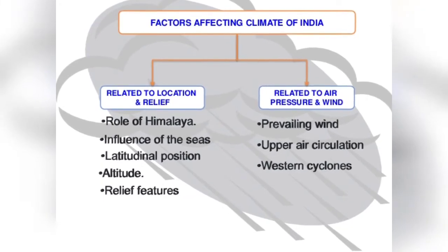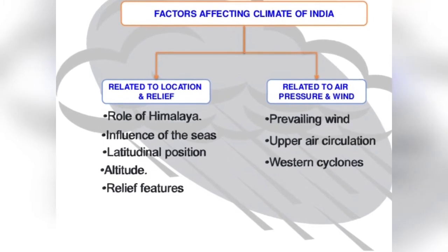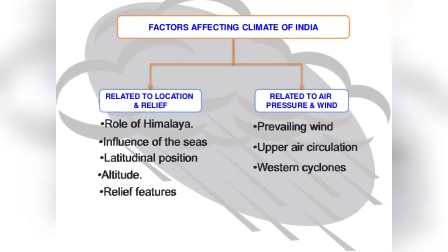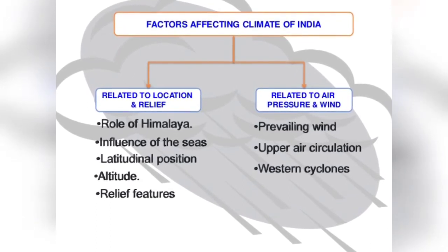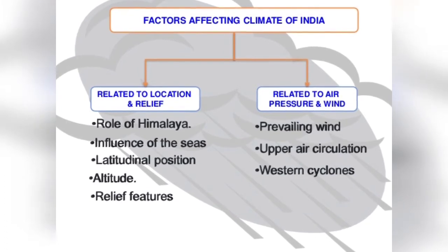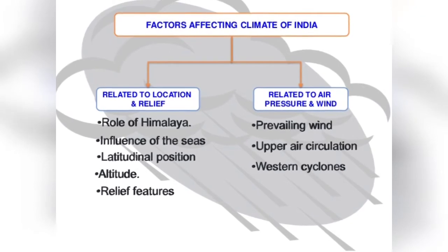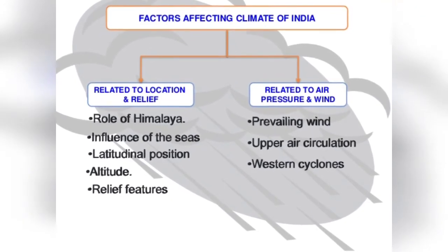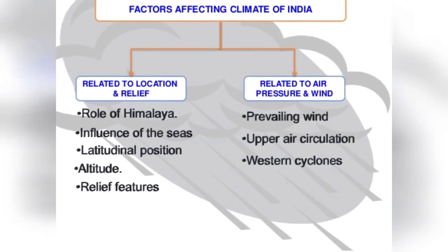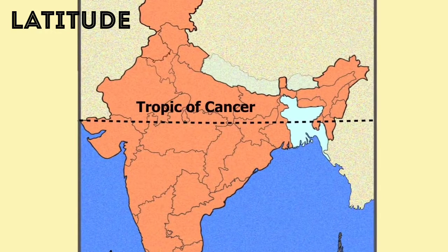Next, we move to the factors affecting the climate of India. There are two types: ones related to location and relief, and the others related to air pressure and wind. We shall study one by one how factors such as the role of the Himalayas, influence of the sea, latitude, altitude, relief features, prevailing winds, effects of monsoon, and upper air circulation affect India.